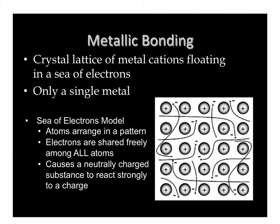A metallic bond happens between metals. As we know, metals don't really like to hold on to their electrons. So if we have metal atoms in a pattern — which we call a crystal lattice — the electrons get to float freely all over the place. We say it looks like a sea of electrons with little metal boats sticking all over the place. These electrons are shared freely, which allows electricity to flow through metals.